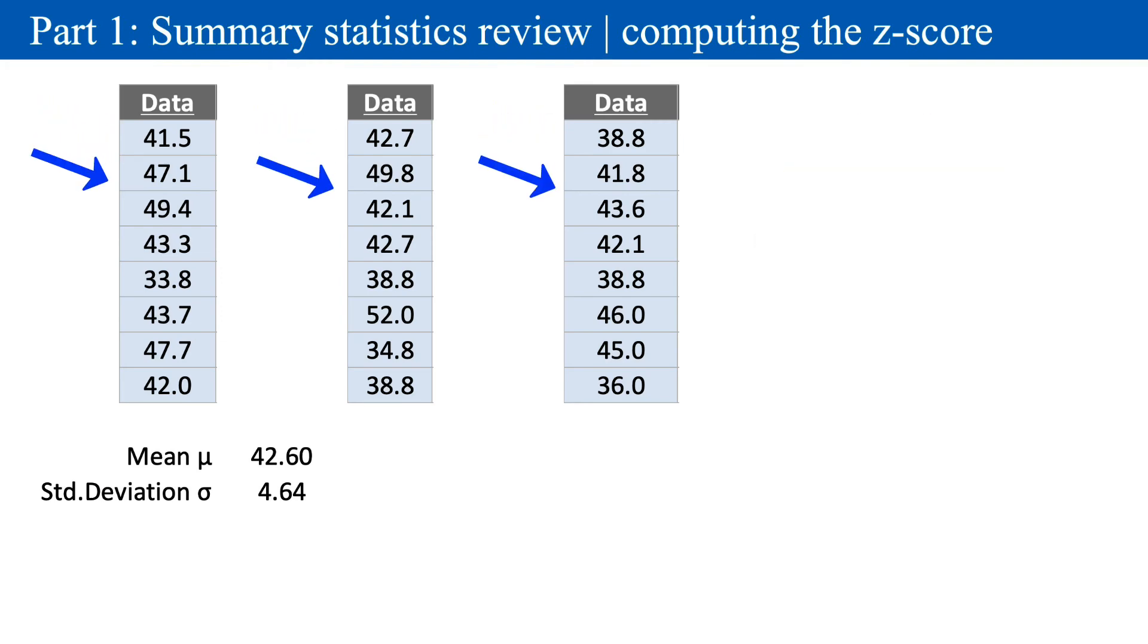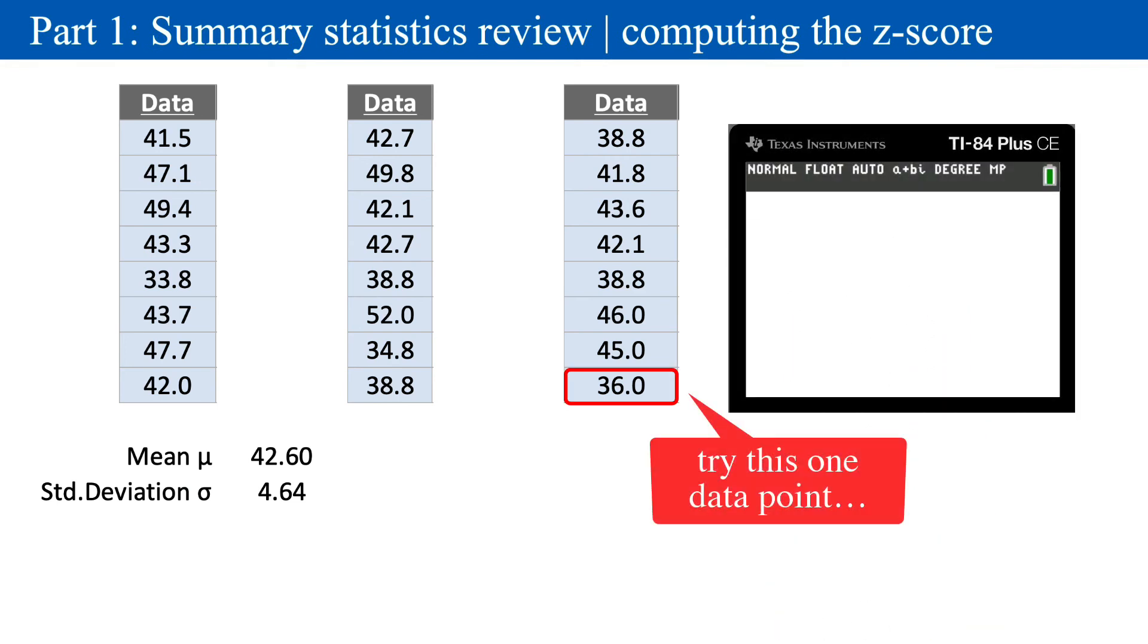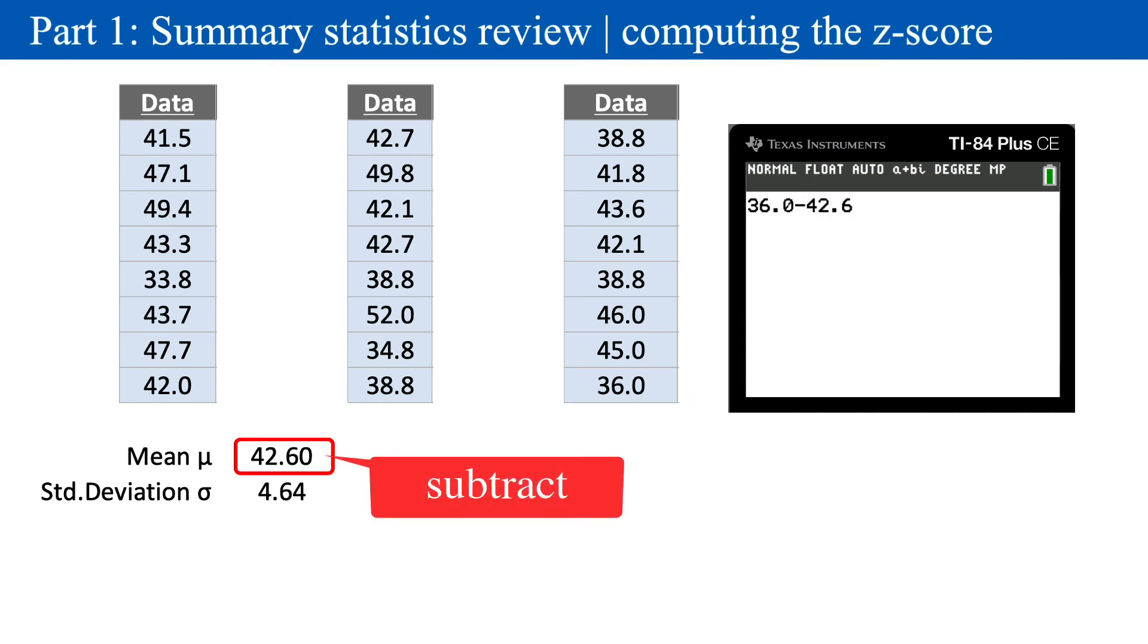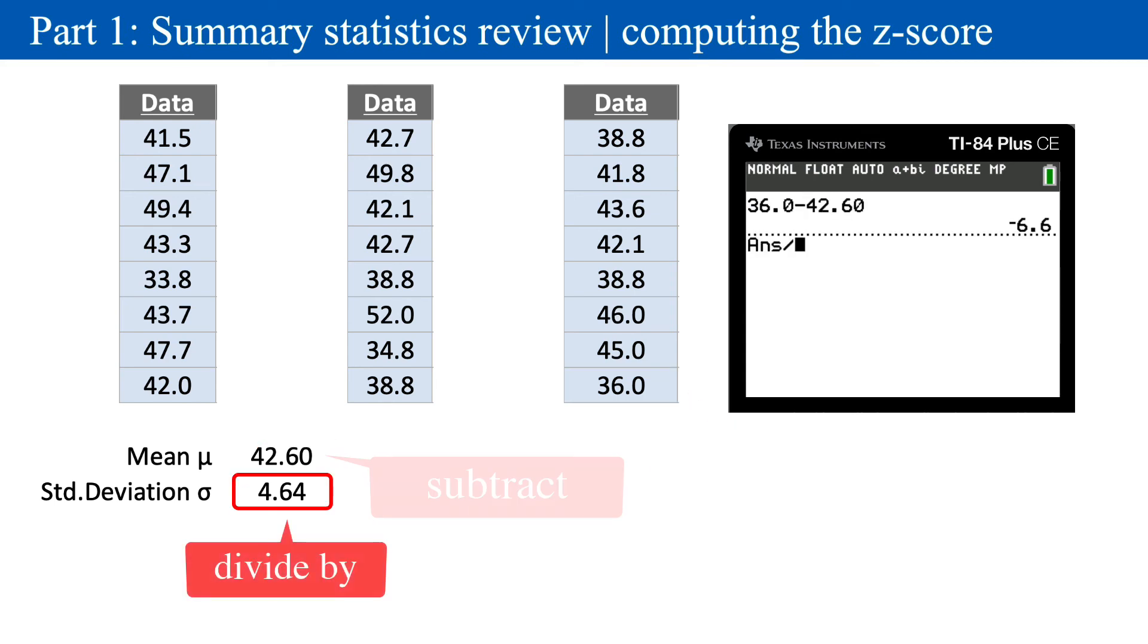Okay, you've got data, you've found summary statistics, you've done the majority of the hard work. Finding a z-score is straightforward. Take any individual data point, subtract the mean, then divide by the standard deviation.